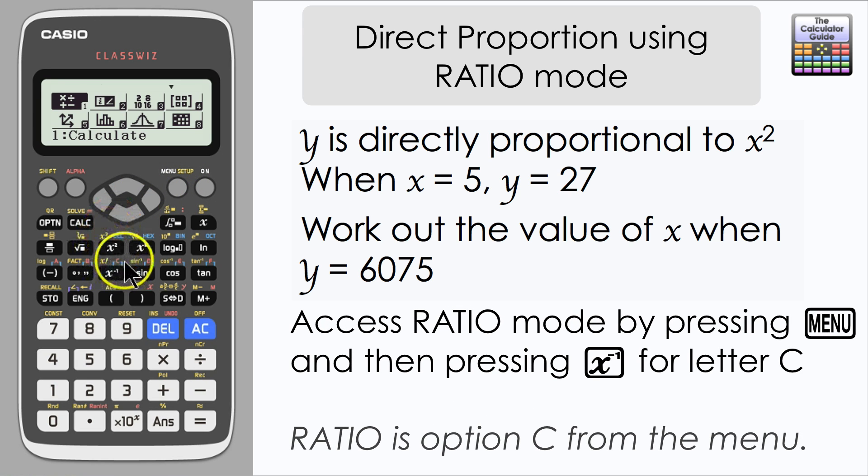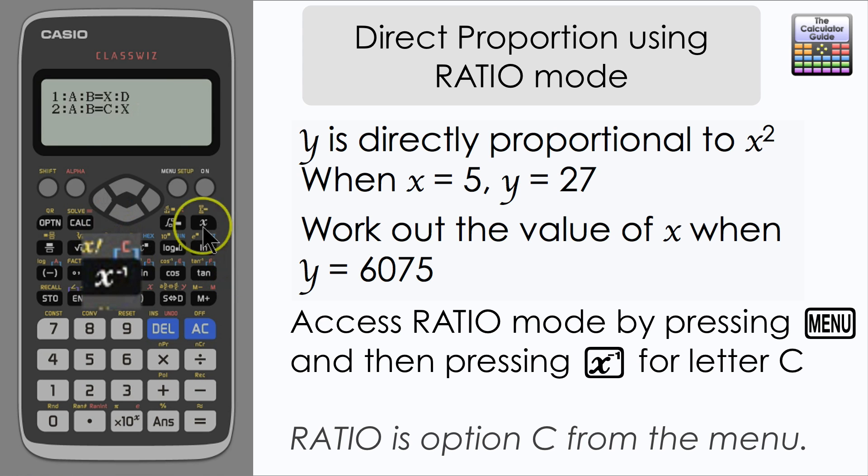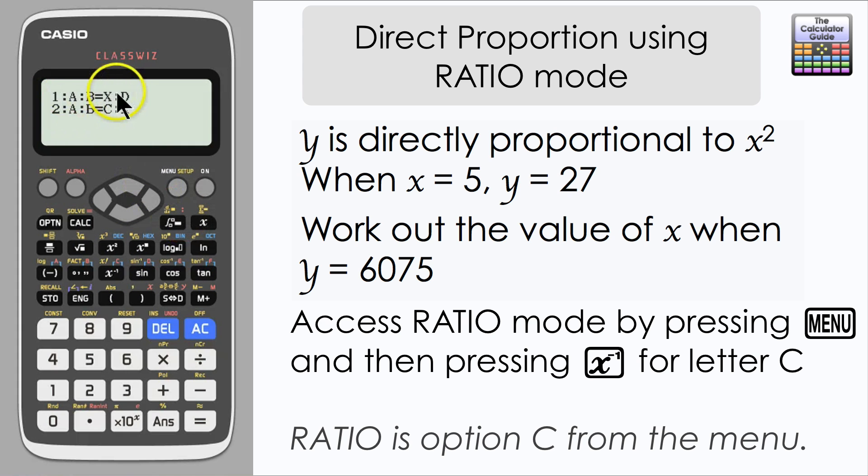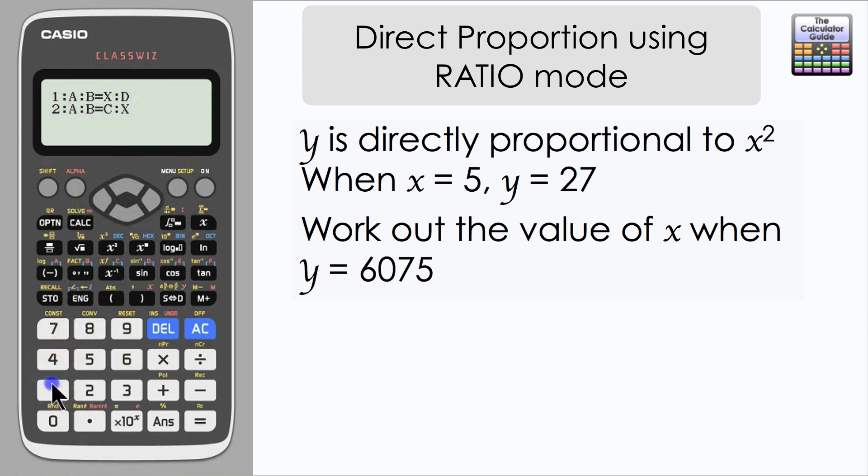We're going to access ratio mode, so press menu and then we can press the shortcut letter C which is ratio mode and will take us straight into the mode that we want.